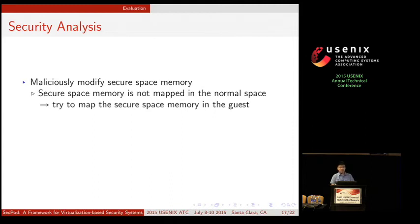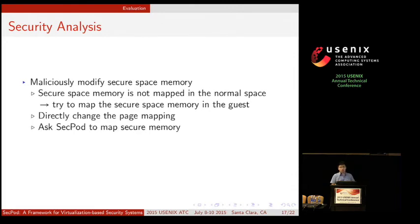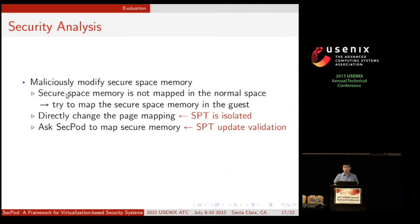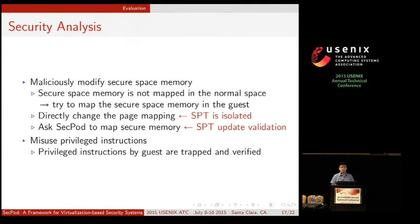Now for the security analysis. Attackers definitely want to modify the secure space memory, but the secure memory is not mapped in the normal space. They might try to map the secure memory into their own address space — for example, by directly changing the page mapping — but in SecPod, the shadow page table is isolated. They may also ask SecPod to map the secure memory, which is prevented by SecPod's shadow page table update validation. Attackers may also misuse some privileged instructions, but those privileged instructions will be trapped and further verified.